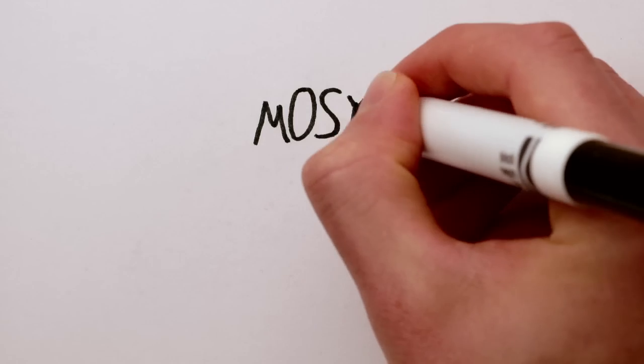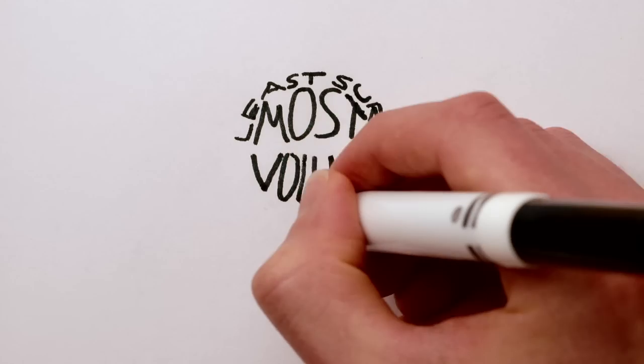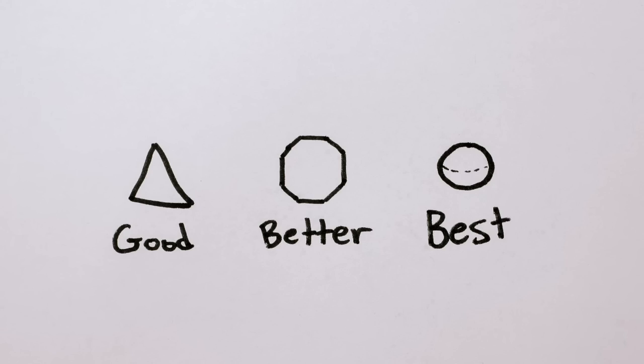A sphere is the shape that contains the most volume with the least surface area. That is, a sphere is the most spherical shape.